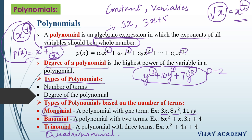Bi means 2, so any polynomial consisting of 2 terms is called a binomial — like 6x square plus x, or 3x plus 4. Tri means 3, so any polynomial consisting of 3 terms is called a trinomial — like x square plus 4x plus 4. A polynomial consisting of 4 terms is called a quadrinomial.